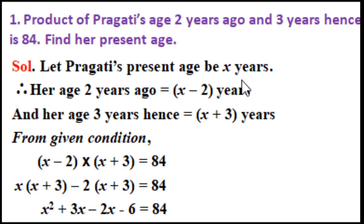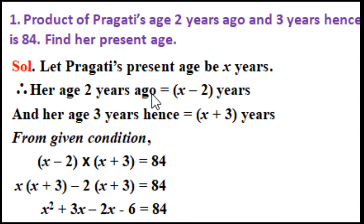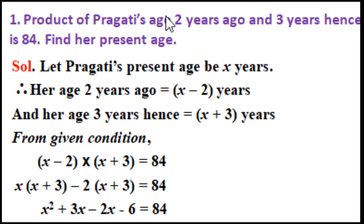Problem 1: The product of Pragatti's age 2 years ago and 3 years hence is 84. We have to find her present age. Let Pragatti's present age be x years. Therefore her age 2 years ago will be x minus 2 years, and her age 3 years hence will be x plus 3 years. From the given condition: the product of her age 2 years ago and 3 years hence is 84.